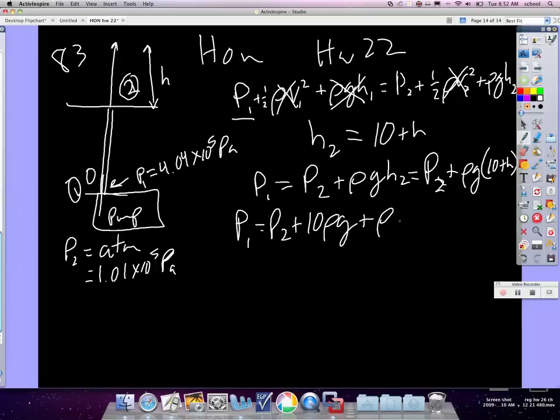Okay, so h is equal to P1 minus P2 minus 10 rho g all over rho g. And, of course, rho is the density of water. So that is the correct answer, and we're good.